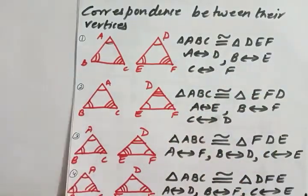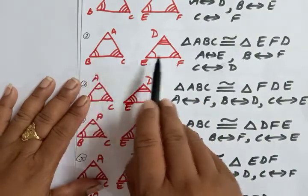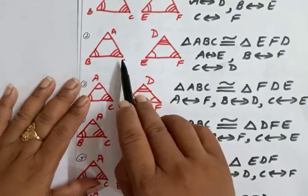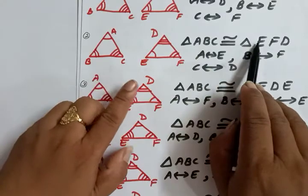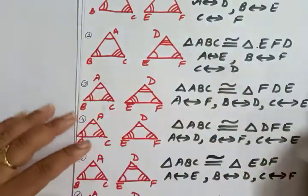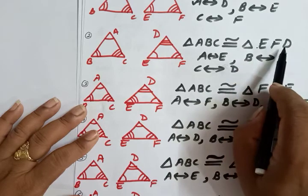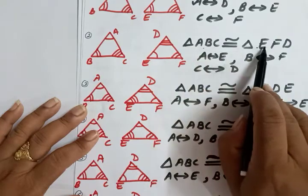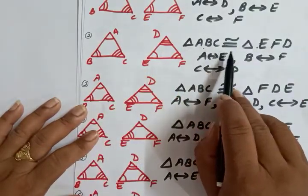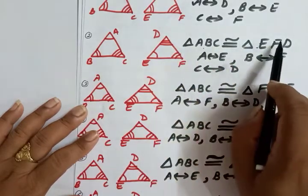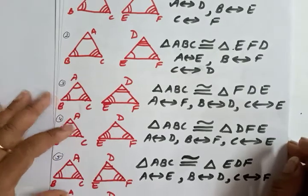In the second example, angle A equals angle E, angle B equals angle F, and angle C equals angle D. So we write triangle ABC is congruent to triangle EFD - not DEF - because angle A corresponds to E, angle B to F, and angle C to D. This change in the name is important to remember. We must write the correspondence correctly and specifically.